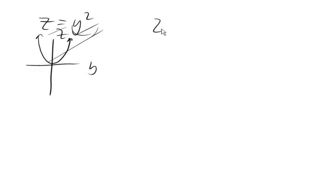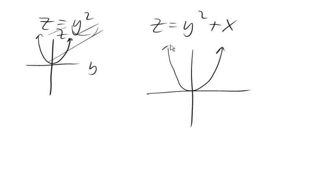So then the question becomes, well, what happens if we take that basic shape and add x to it? So now, the traces are gonna change with x, right? So if x is 0, we'll still get the same basic parabolic shape.